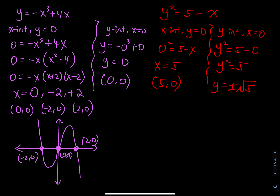When the degree is even — second power, fourth power, and so on — you must use plus or minus. Therefore, this equation has two y-intercepts: one at (0, √5) and one at (0, negative √5).